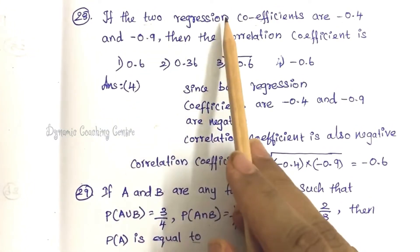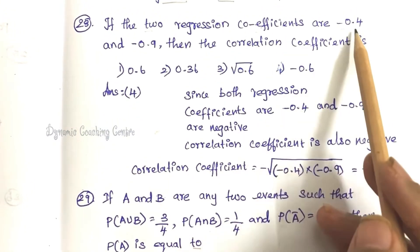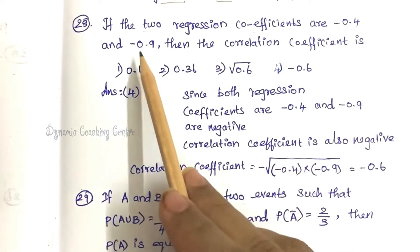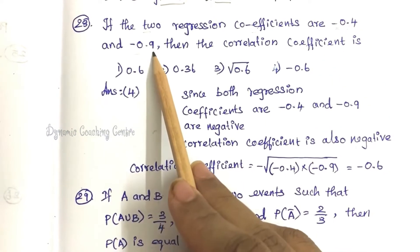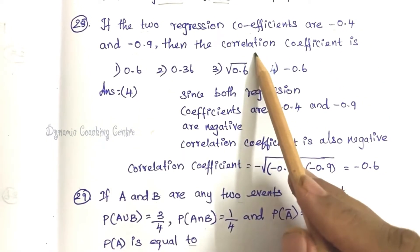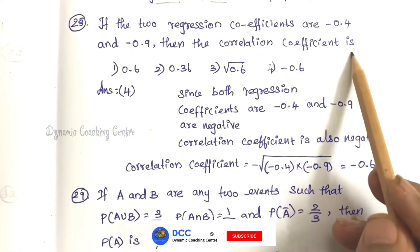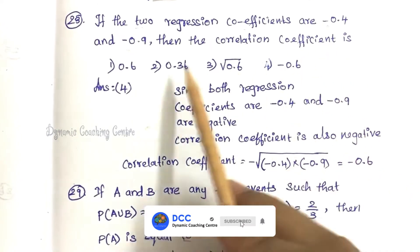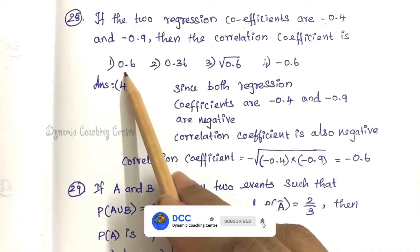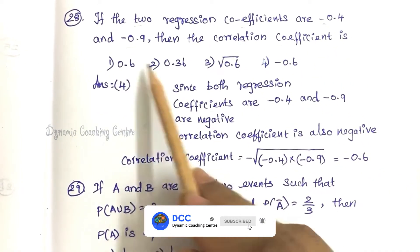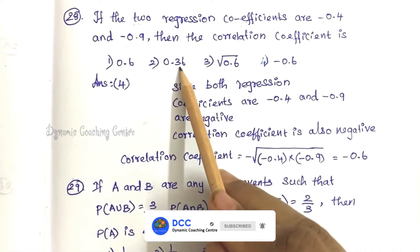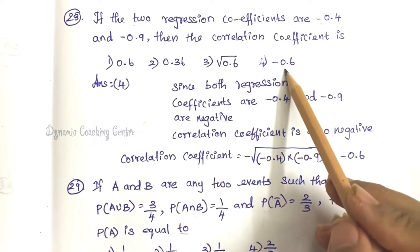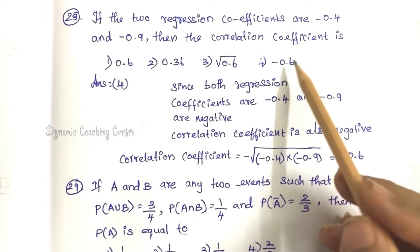If the two regression coefficients are given by minus 0.4 and minus 0.9, then the correlation coefficient is — option 1: 0.6, option 2: 0.36, option 3: root of 0.6, and option 4: minus 0.6.